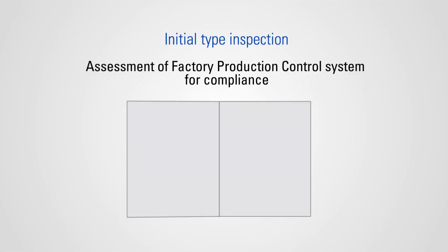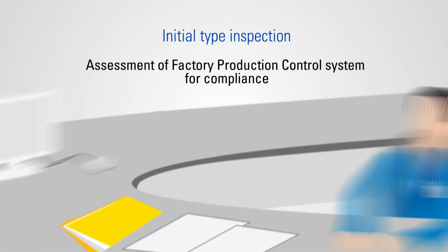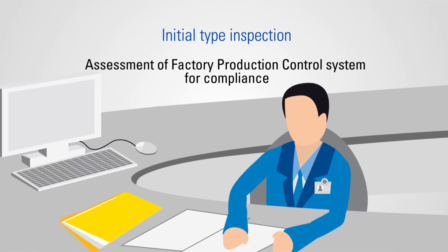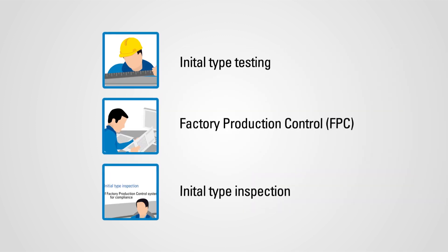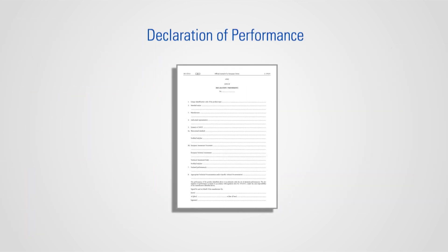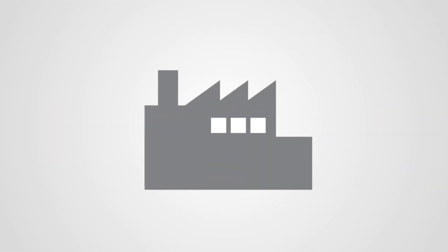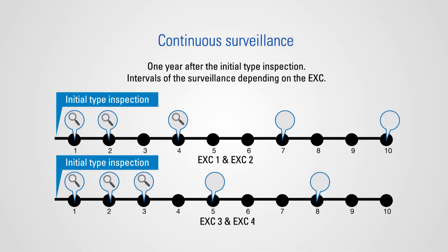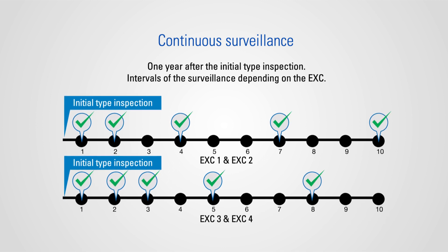Your factory production control system must then be inspected and certified by a notified body, like TÜV SÜD. Once initial type inspection is completed, you may then issue a declaration of performance and affix the CE mark to your products. Thereafter, your factory production control system will have to undergo regular continuous surveillance.